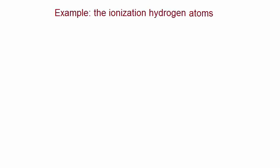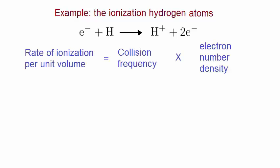As an example, let's use the ionization of hydrogen atoms. Ionization can be symbolized by this chemical equation. On the left hand side, we have an electron undergoing a collision with a neutral hydrogen atom. On the right hand side is the result of an ionization, where we end up with an ionized hydrogen atom, essentially a proton, plus the original electron and the electron produced from ionization. So that's two electrons. The rate of this ionization is given by the following. On the left hand side of this equation, we would like to determine the rate of ionization per unit volume. On the right hand side, this is determined by the collision frequency times number of electrons per unit volume.